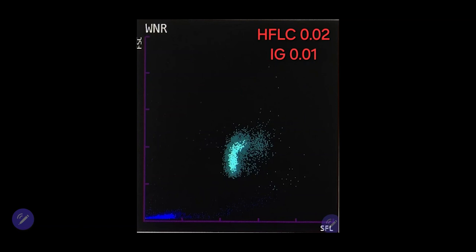Let's first look at the WNR channel. Before we start, we need to check what is written on the x and y axes of the WNR graph. For example, in this case, the x-axis is labeled SFL. SFL refers to the staining of fluorescent.